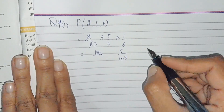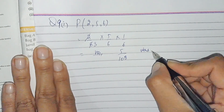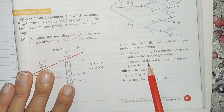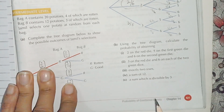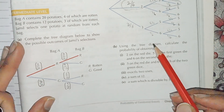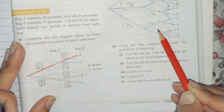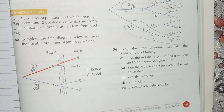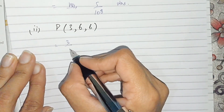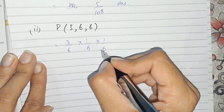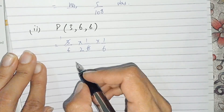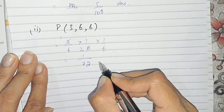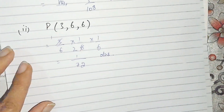For part 2 — rolling 3 on the red die and 6 on each of the two green dice — we multiply: 3 over 6 times 1 over 6 times 1 over 6. That gives 3 over 216, which simplifies to 1 over 72. This is the probability for the second part.